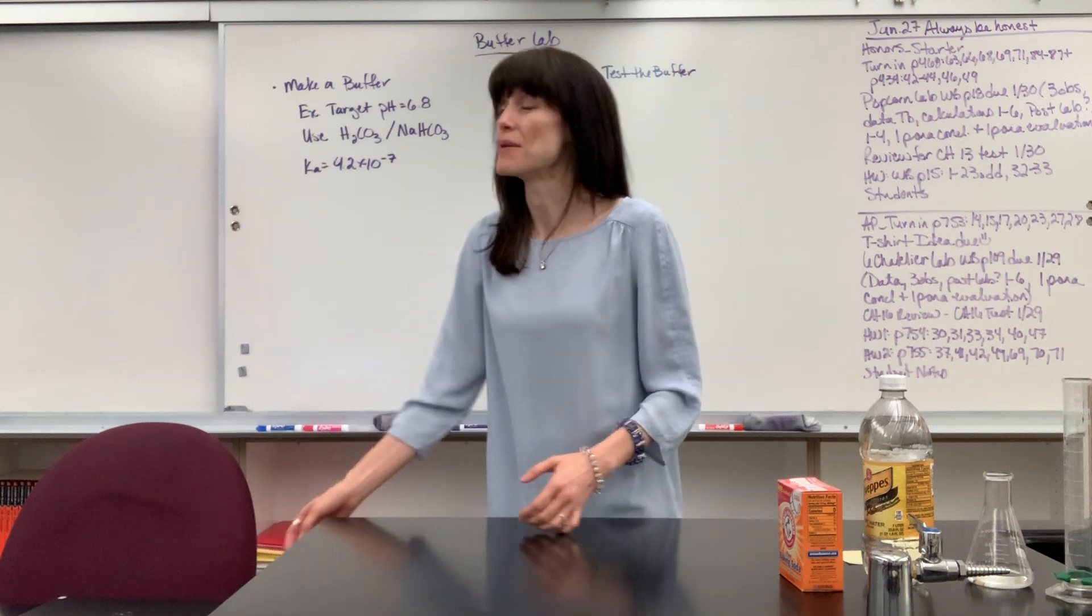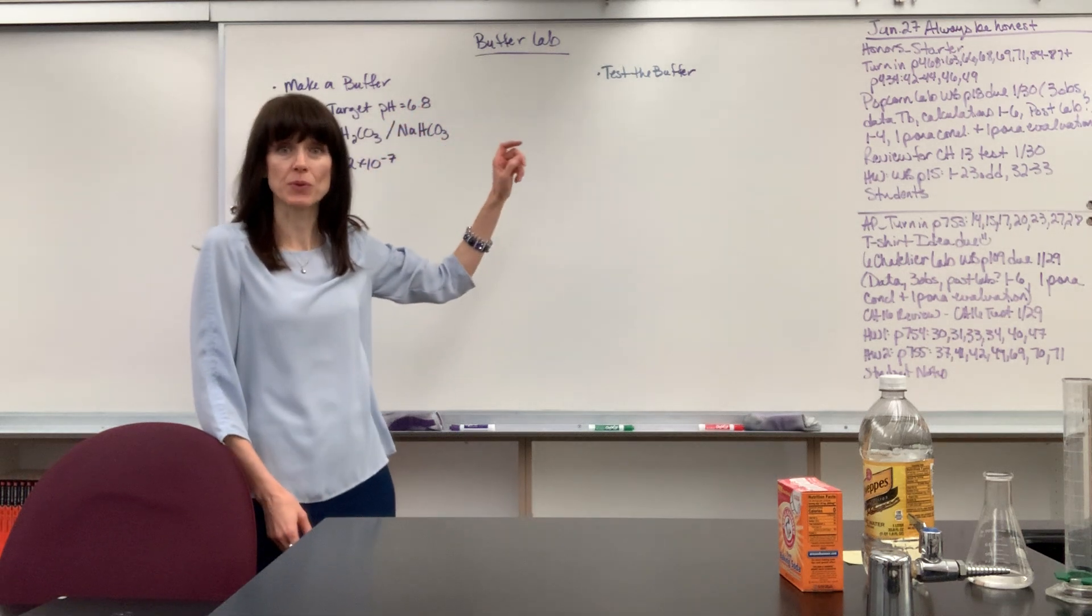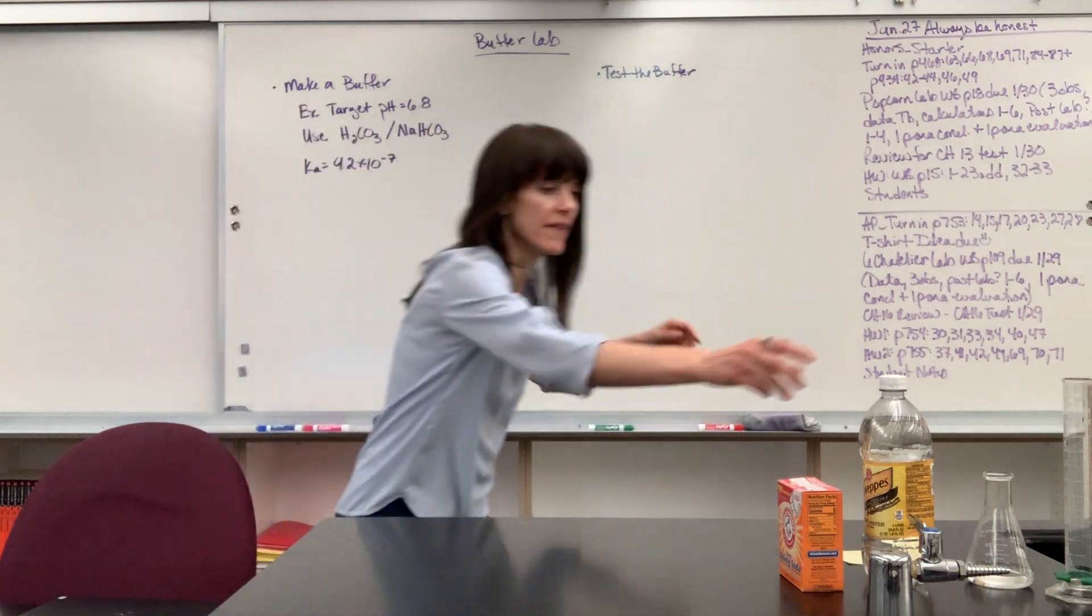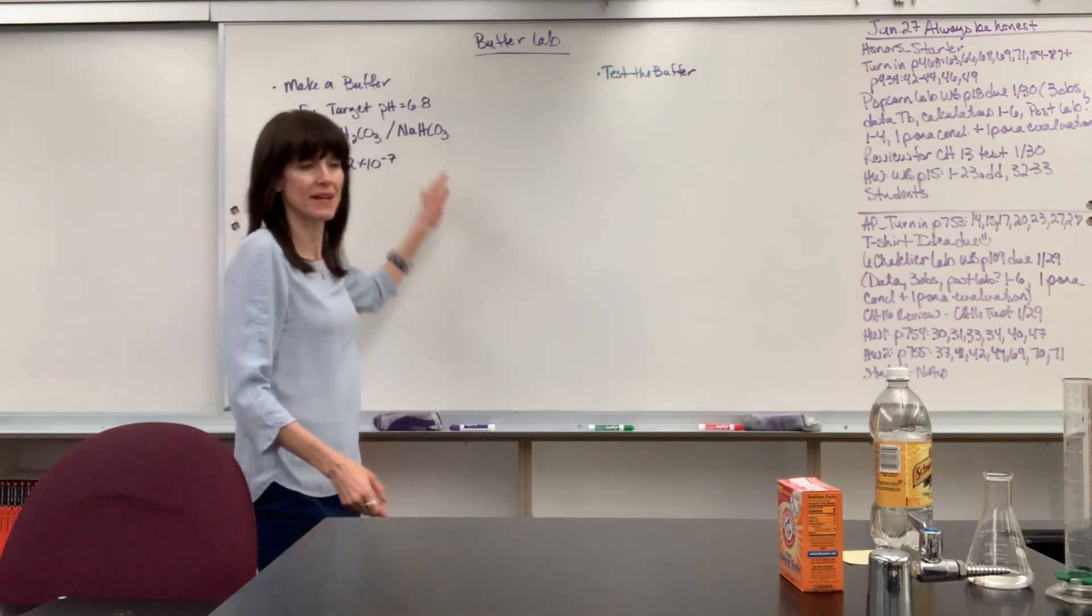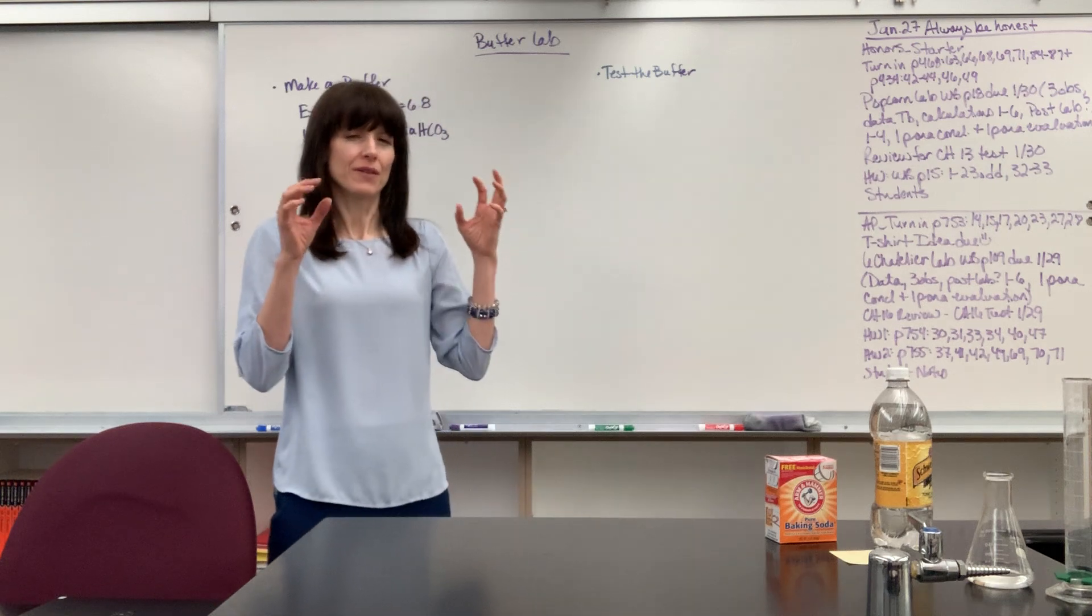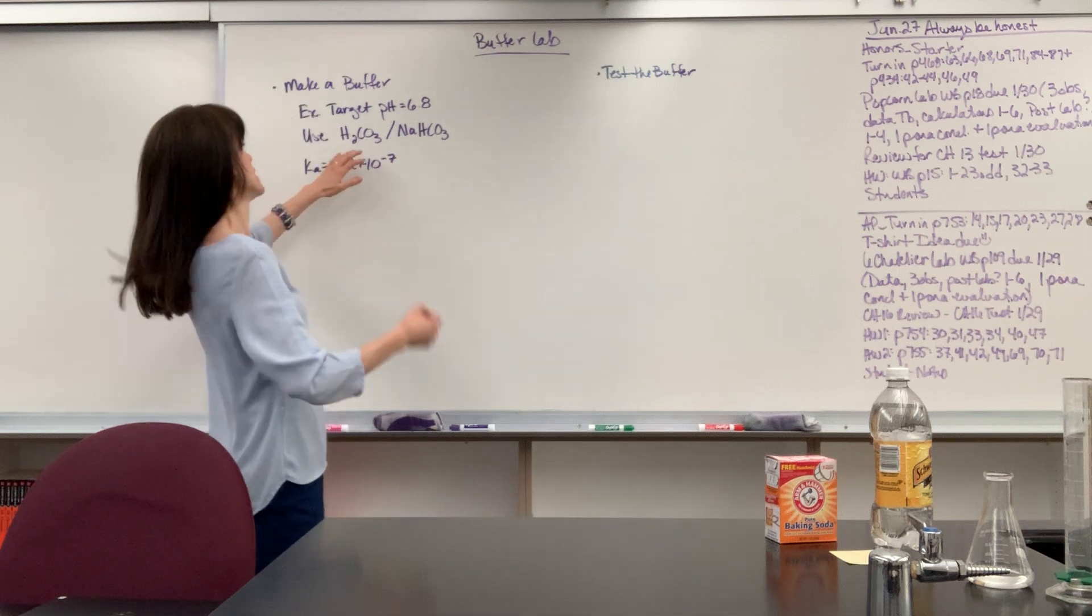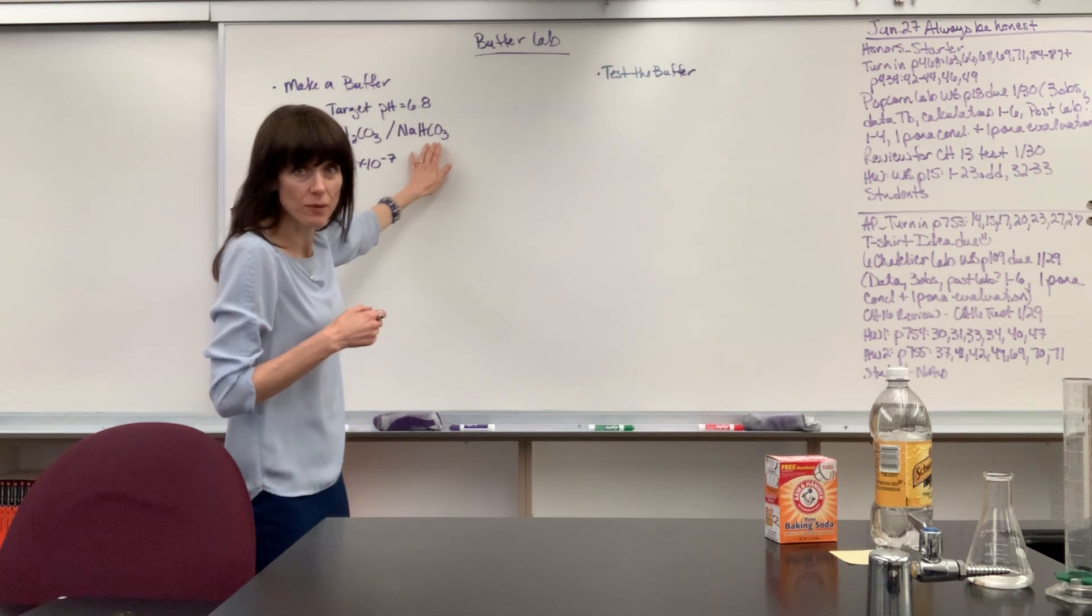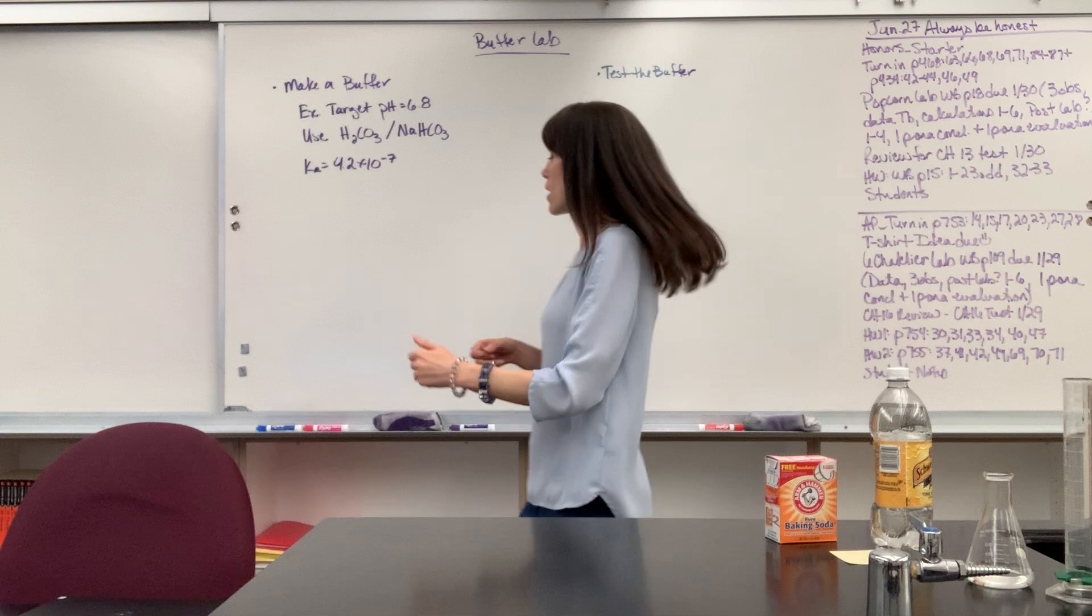So here is our task, the example. We want to create a buffer with the target pH of 6.8. Now the supplies that we have is that we're going to have some carbonic acid and that comes from this tonic water and we're going to have sodium bicarbonate, which is just baking soda right there. So we want to, in the right proportions, mix those two substances to create a buffer. It's going to give us the acid, which is the carbonic acid, and the hydrogen carbonate, which is going to be the conjugate base. Now I wrote down the Ka value for our carbonic acid.